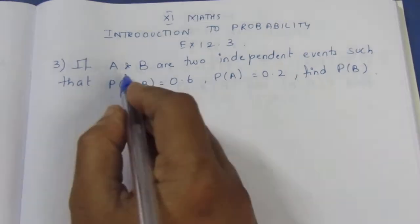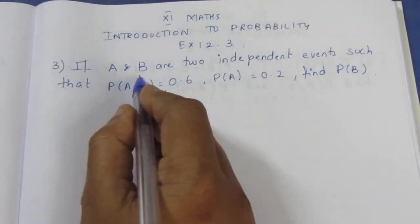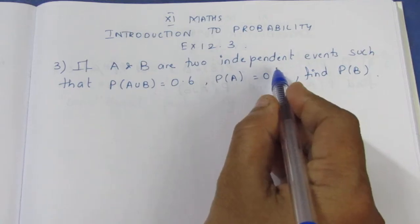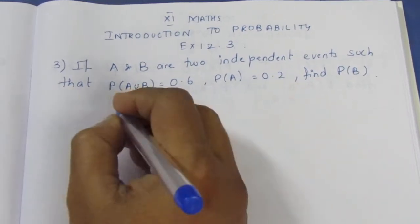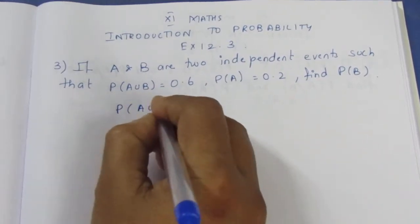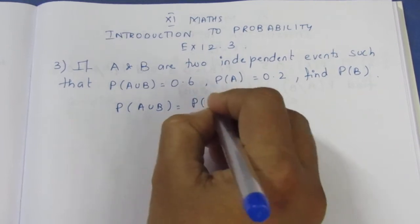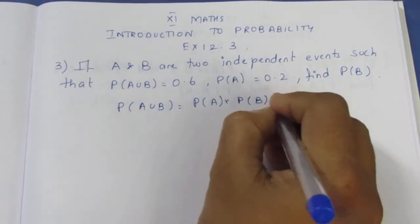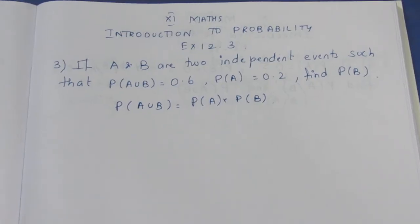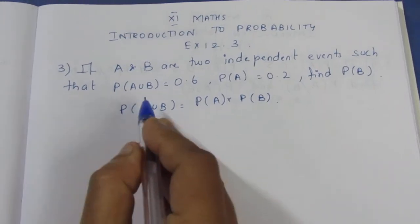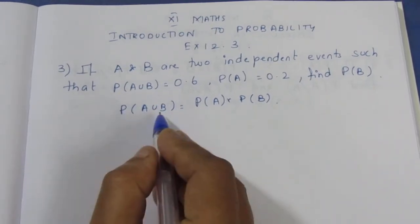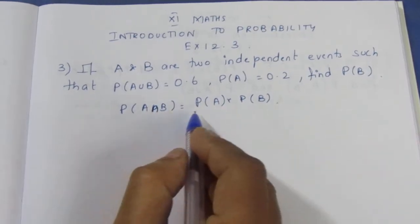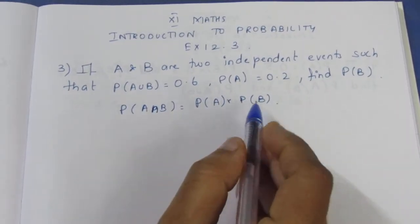Given: A and B are two independent events. For independent events, the formula is P of A intersection B equal to P of A into P of B. This is the formula for independent events.